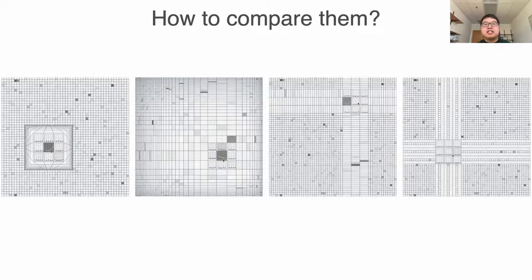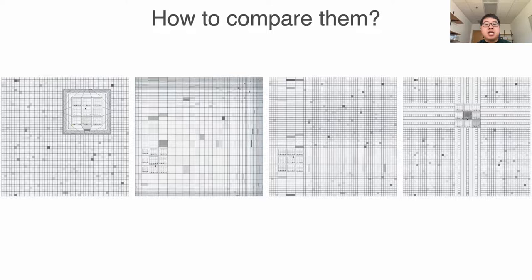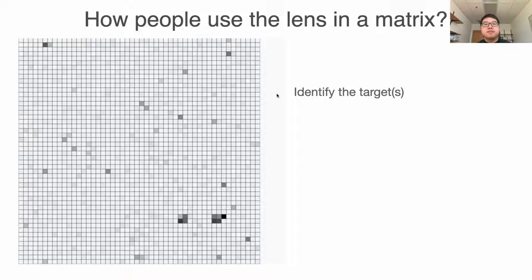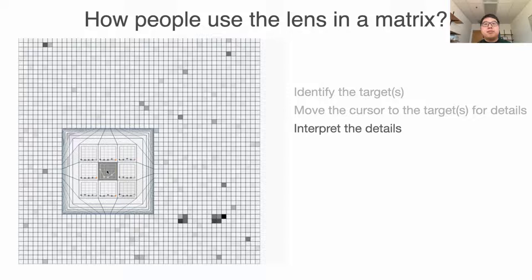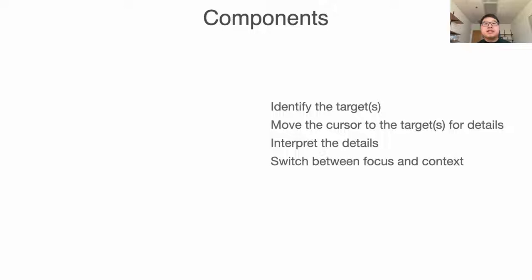We started from thinking about the typical workflow of using those interaction techniques. The user needs to first identify the targets, then move the cursor to the target to reveal the details, and finally interpret the details to make sense of the data. Often times, it is also important to switch between the focus and the context. These steps can be considered as four components: wayfinding, travel, interpretation, and context switching.